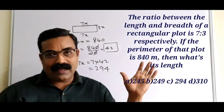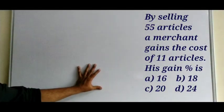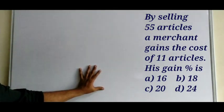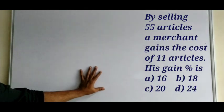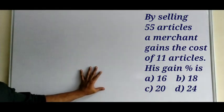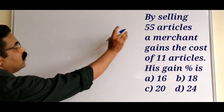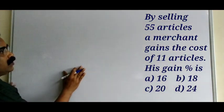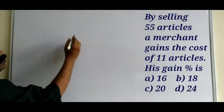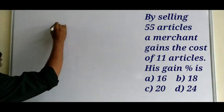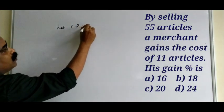The next question: by selling 55 articles, a merchant gains the cost of 11 articles. What is his gain percentage? Four options are given. Let us assume each article costs one rupee, so 55 articles cost 55 rupees. That is his cost price: CP = 55 rupees.